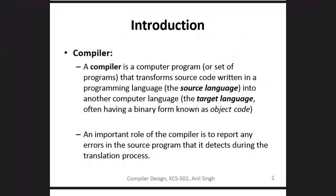A compiler is a computer program that transforms the source code written in a programming language into another computer language as a target language, often having a binary form known as object code. The source code can be in any programming language like Java, Python, HTML — whatever. It converts into machine language, that is assembly language. We call it target language — in binary form, 0 and 1. We call it object code.